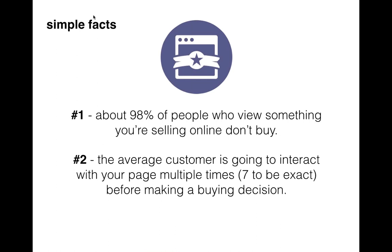Think about the 90% of people — for every 100 people that go to your site, 90 of them or more might not buy at that time. Number two: the average customer is going to interact with your page multiple times before making a buying decision. They may be emailed once, see an ad once, get emailed from someone else, and finally make a buying decision. The more times you can get your message in front of somebody, the more you increase your ability to sell them. Seven is like the golden number — they're either going to buy or they never would have bought in the first place.